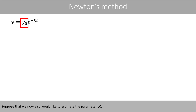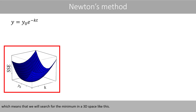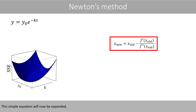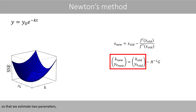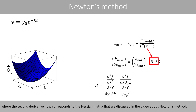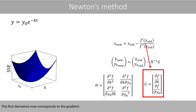Suppose that we now also want to estimate the parameter y0, meaning we will search for the minimum in a three-dimensional space. The simple equation is now expanded so that we estimate two parameters, where the second derivative corresponds to the Hessian matrix and the first derivative corresponds to the gradient, as discussed in the video about Newton's method.